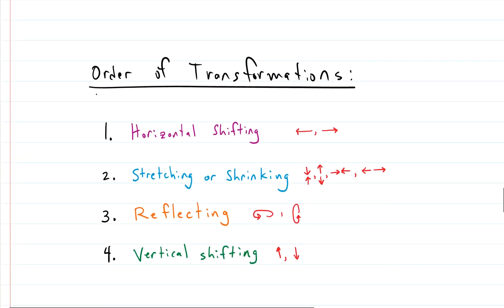The order of transformations is also important. Just like the order of operations with PEMDAS, you can't do transformations in any order you want — you have to do them in a specific order. First, do the horizontal shifting; then the stretching and shrinking; then the reflecting; and finally the vertical shifting. If you don't have all of these, whichever ones you have, you still follow the same order.